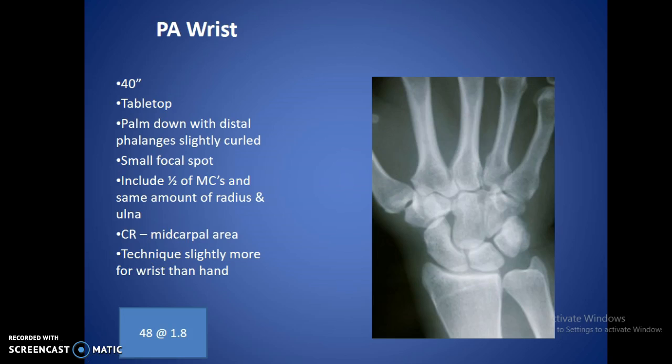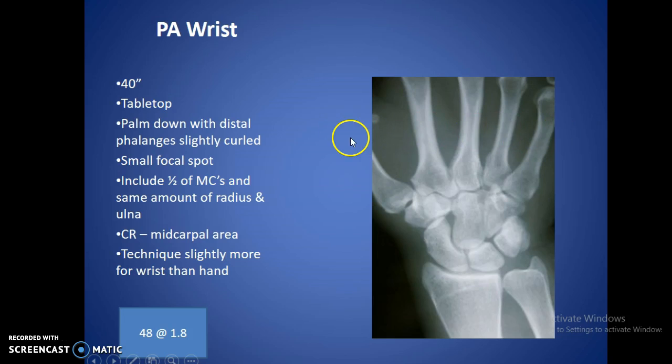For the PA wrist, it's going to be 40 inches, tabletop, similar to the hand. Palm down, distal phalanges slightly curled — not so much that they come over the MCPs, just slightly curled. Include half of the metacarpals and the same amount of the radius and ulna — we don't need to see the entire metacarpal heads. You can trim collimation right around there. CR is at the midcarpal area — there are no landmarks, so just center right around that area. Technique is going to be just a little bit more than you use for the hand.